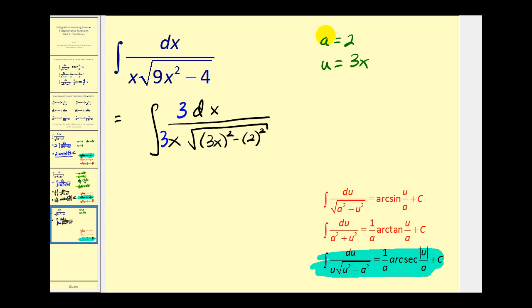Next, we need to identify du. Well, du would equal three dx. And if we look at our integrand, we do have a three dx, so all of this will be equal to du. Let's go ahead and take this and rewrite it in terms of u and a to make sure it fits the pattern.